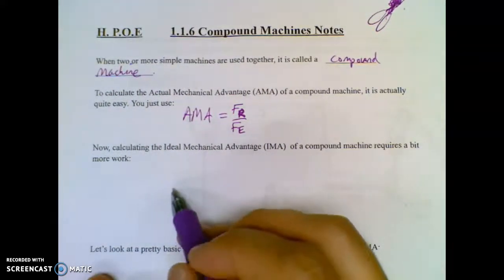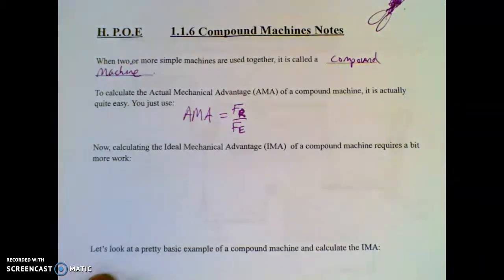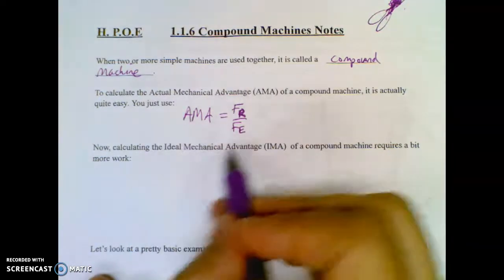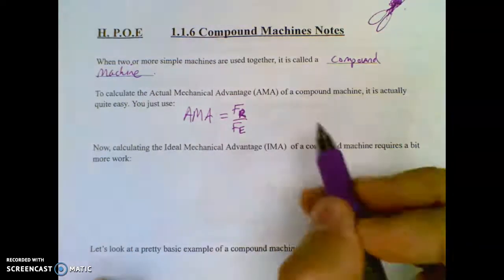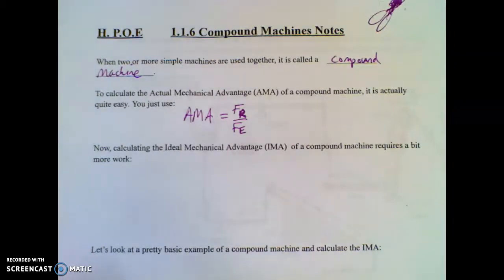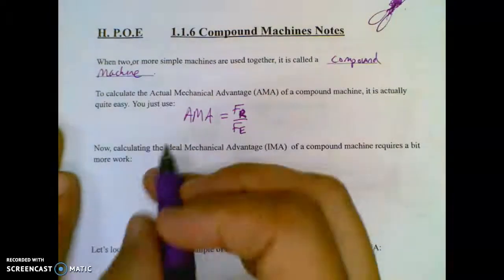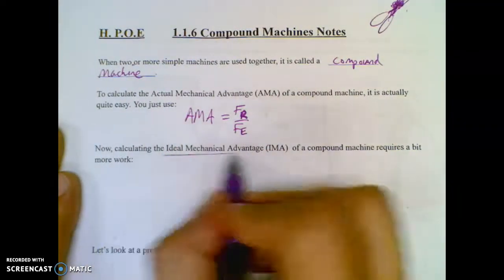So it's not crazy, but Ideal Mechanical Advantage of a compound machine requires a bit more work. It's also the thing you can do easier because how often do you actually have force meters at the beginning and a force meter at the end? Since ideal mechanical advantage deals with distances...